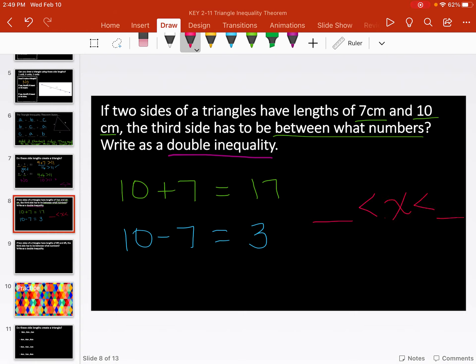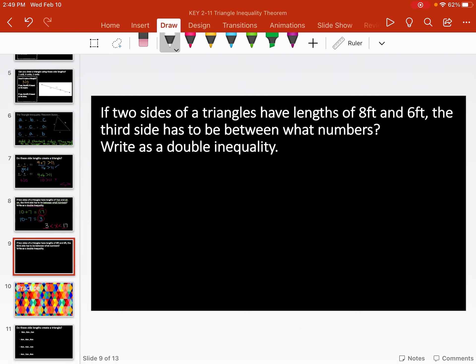What that looks like is, it's going to be some number is less than x, which is less than some number. My two numbers I'm going to plug in are these, the 3 and the 17. So 3 is less than what x is going to be. 3 is less than what that side length could be. And that side length is less than the 17 because the 17 is too big. So x is representing my side length, what it could be. And my side length has to be greater than 3, but less than 17. So we set it up in this double inequality form.